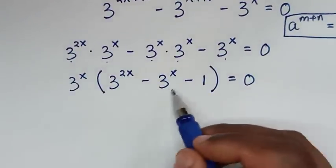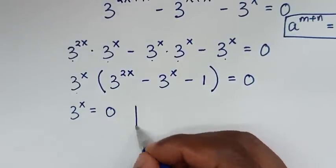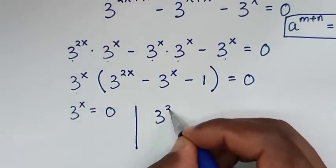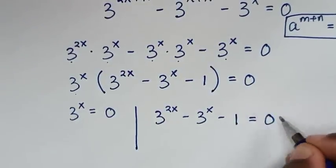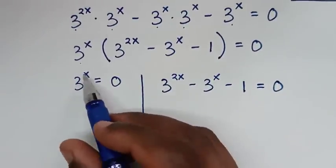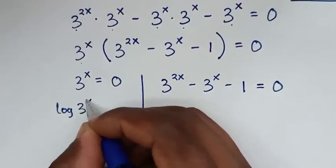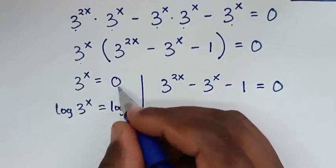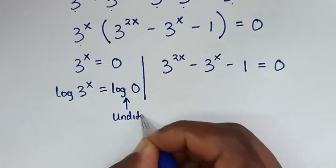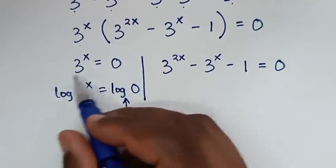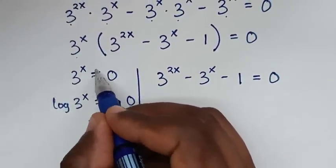From here we have two solutions. The first solution is 3 power of x equals 0, and the second solution is 3 power of 2x minus 3 power of x minus 1 equals 0. For the first solution, applying log to both sides gives log of 0, which is undefined. Also, 3 power of any number cannot equal 0, so we reject this solution.